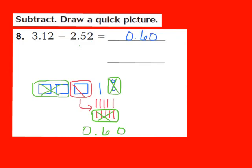As you can see, there's a second line here. I could write my answer as 60 hundredths, or I could also write my answer as 6 tenths. These two decimals are equivalent to each other — they're equal to each other — and they're both acceptable ways to write our answer.